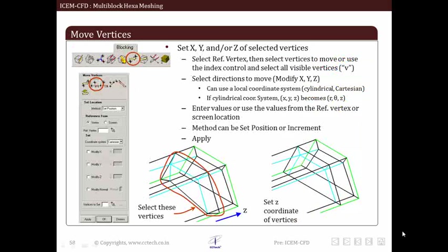Under move vertices operation there is a set location option. By using this option we can move vertices by changing their location. We can do this by two methods: first by set position, second by set increment. Under set position we can modify coordinates of vertices. For this operation we select the reference point for vertices to be moved. This reference point can be a vertex or a screen point.